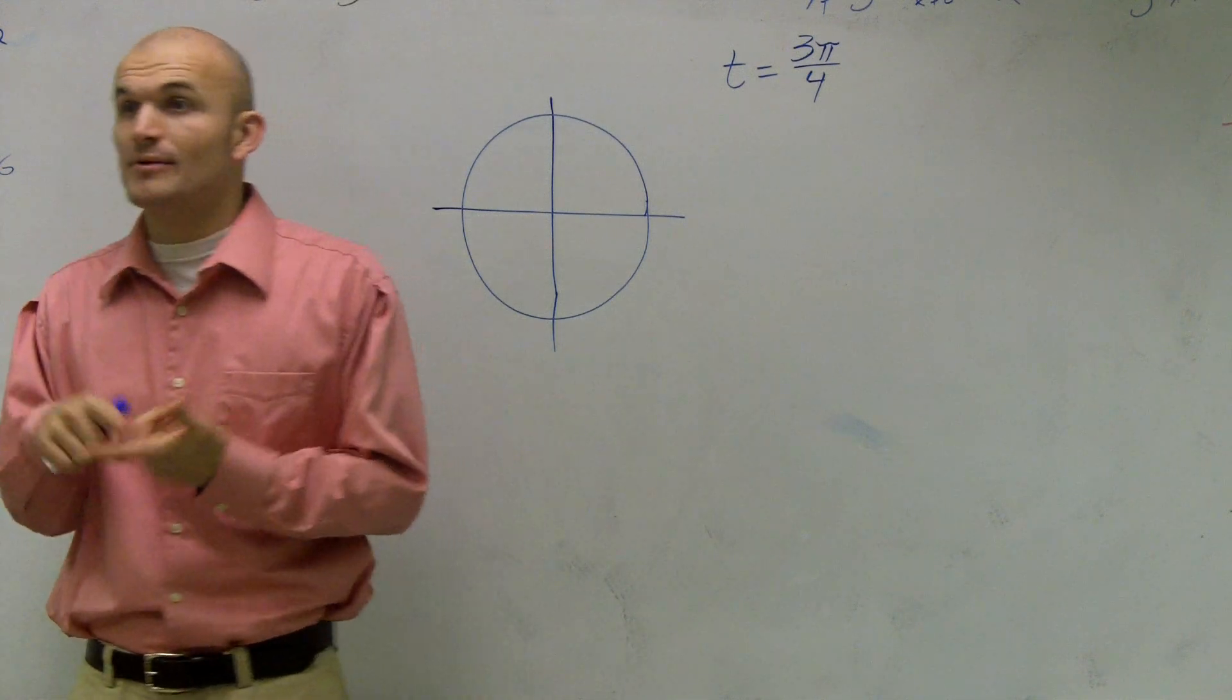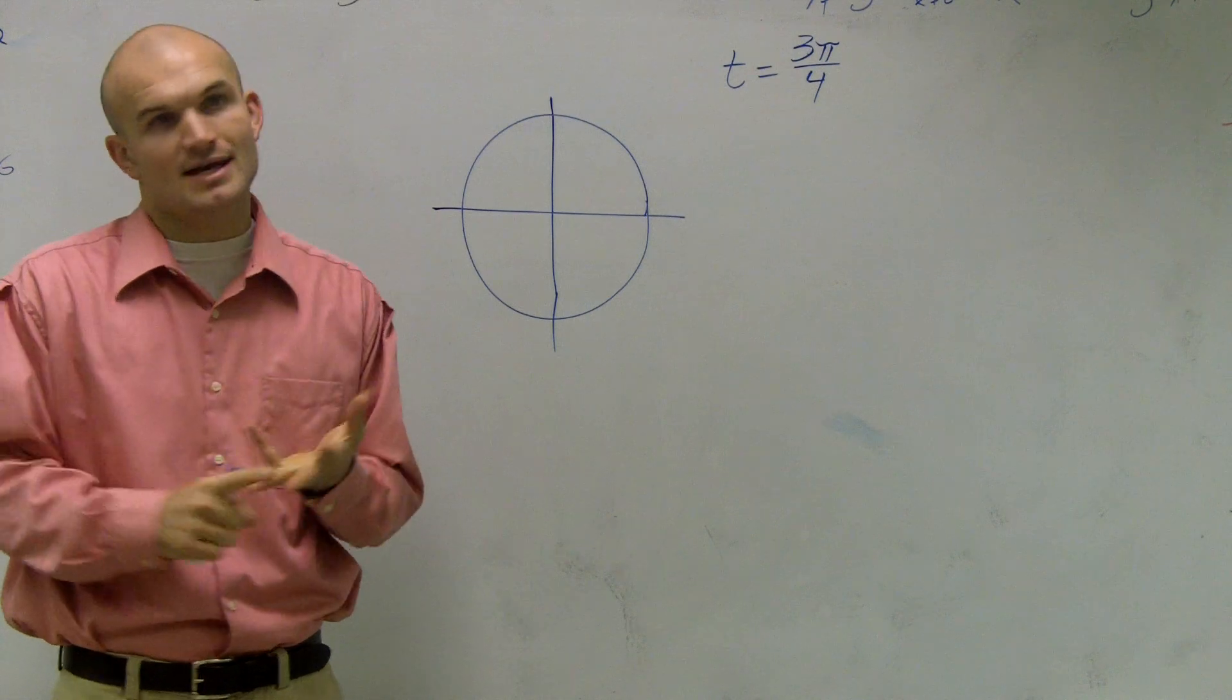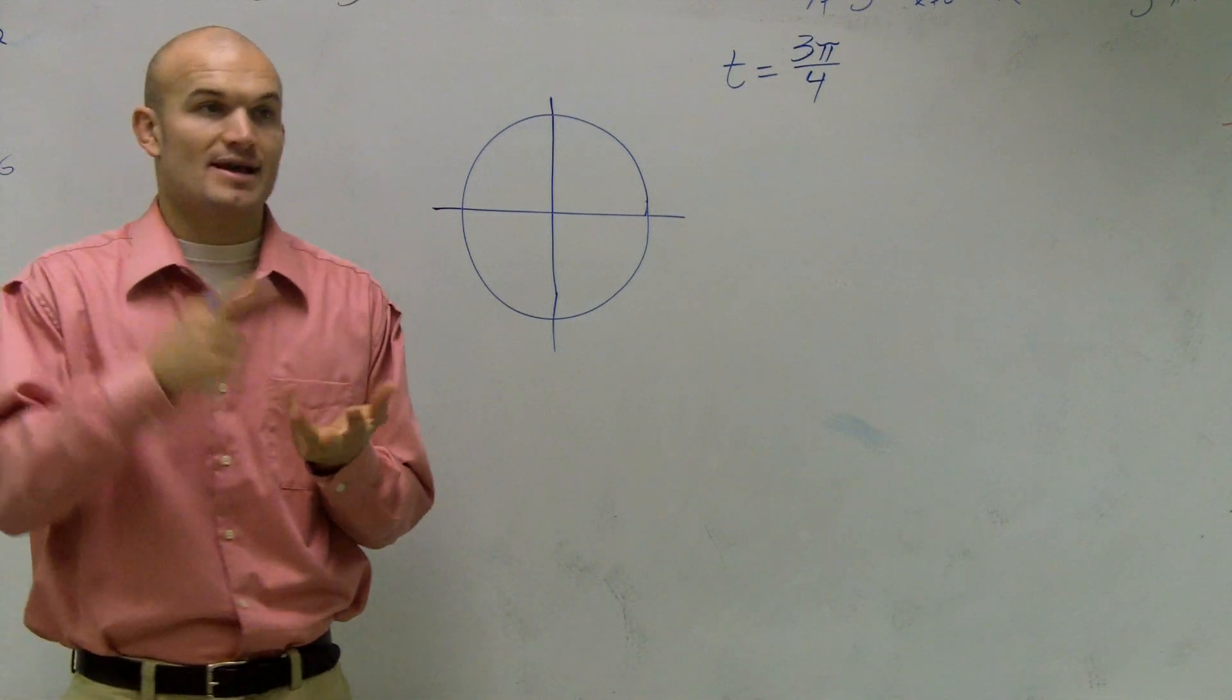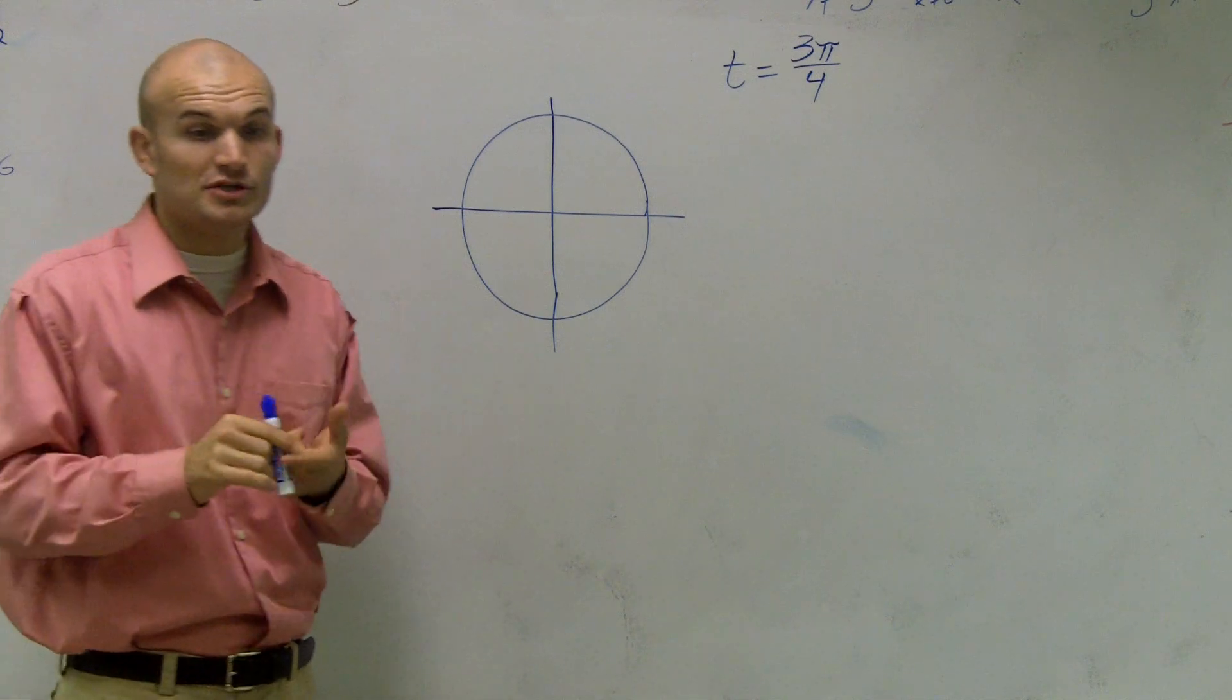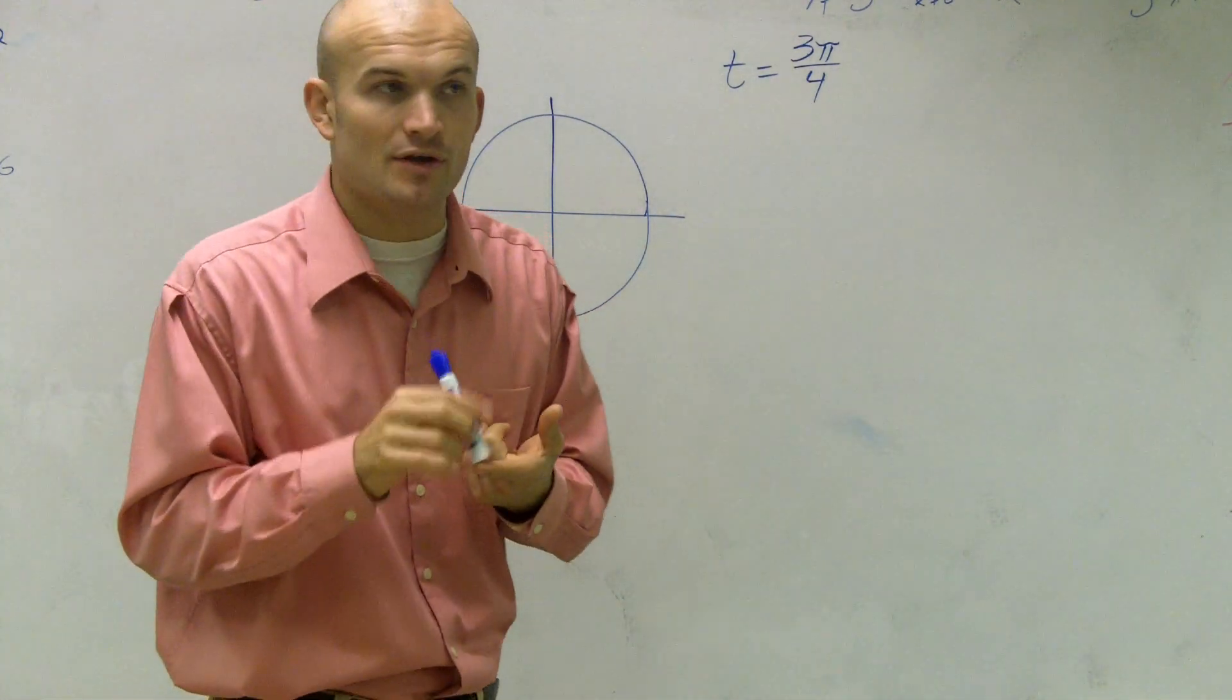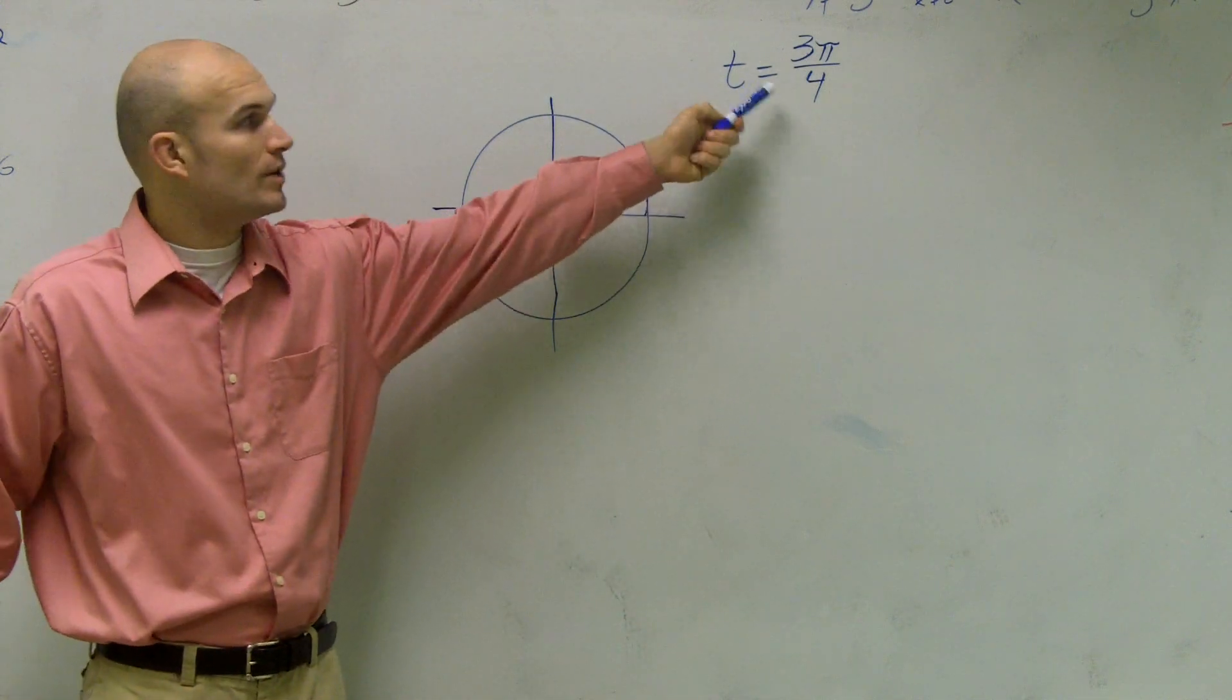So for this problem, what they want us to do is evaluate the six trig functions. We've got sine, cosine, tangent, cosecant, secant, and cotangent. Well, the first thing before we can even do any of that, we need to do like our problems 5 through 12. That's why I gave you all those practice of finding where is your point on the unit circle.